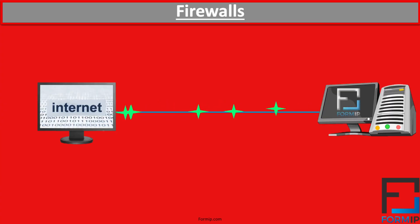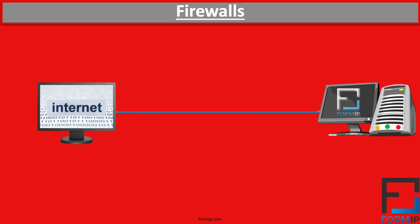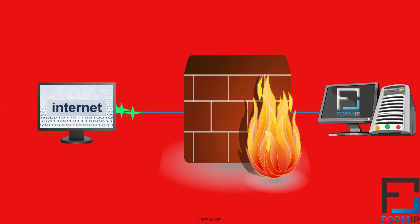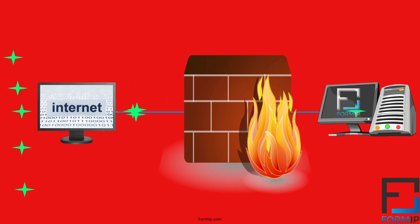A firewall will block or allow traffic — basically, it filters the data packets which enter the network and authorizes them, or not. Today, the firewall is essential for any company to ensure the security of its network.